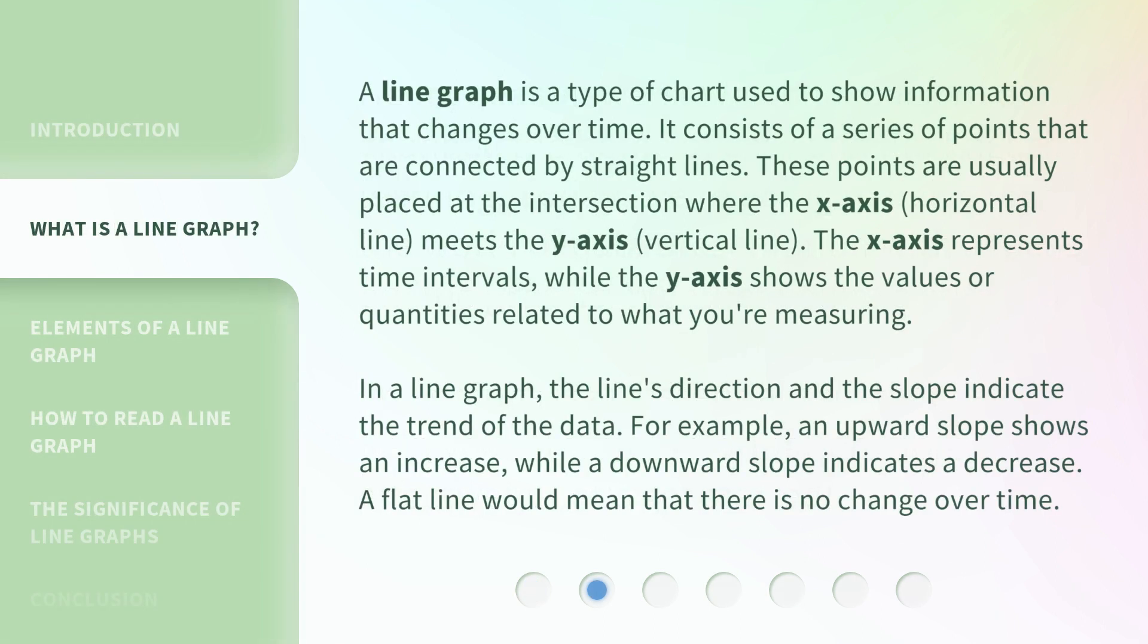A line graph is a type of chart used to show information that changes over time. It consists of a series of points that are connected by straight lines. These points are usually placed at the intersection where the x-axis (horizontal line) meets the y-axis (vertical line). The x-axis represents time intervals, while the y-axis shows the values or quantities related to what you're measuring.